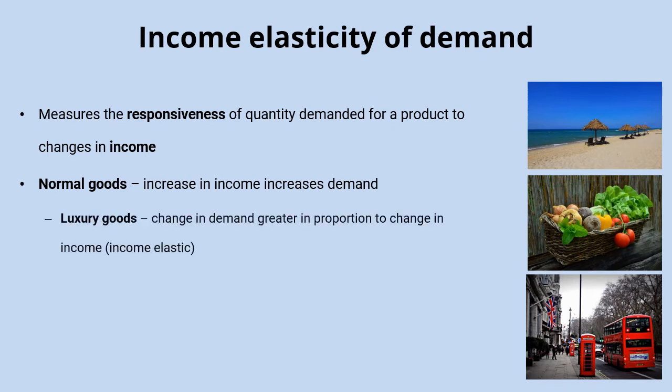That can happen to different degrees, so there are two types of normal goods. The first are luxury goods, where the change in demand is greater in proportion to the change in income — we might also call those income elastic. For example, if income increases, people will generally demand a lot more holidays because they really desire them, and demand will change quite significantly.